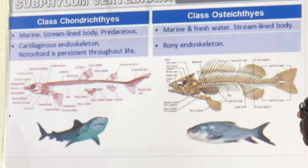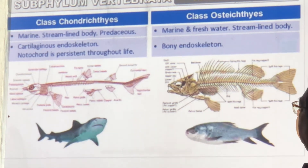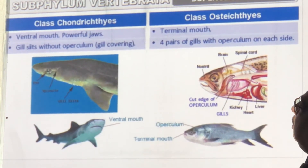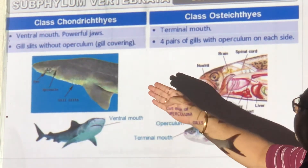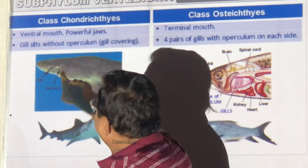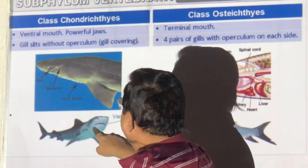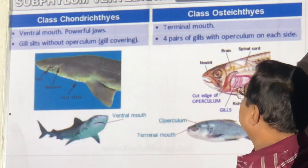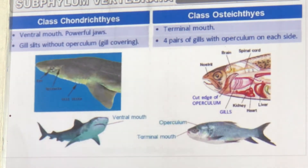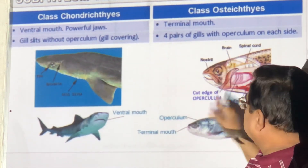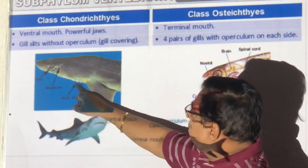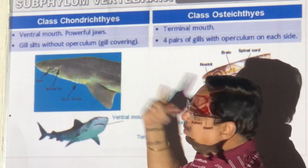Shark is an example of a cartilaginous fish. The mouth position is different — see where the mouth is in each. Osteichthyes have an operculum (gill cover) while Chondrichthyes do not — you can see the exposed gill slits on the shark.